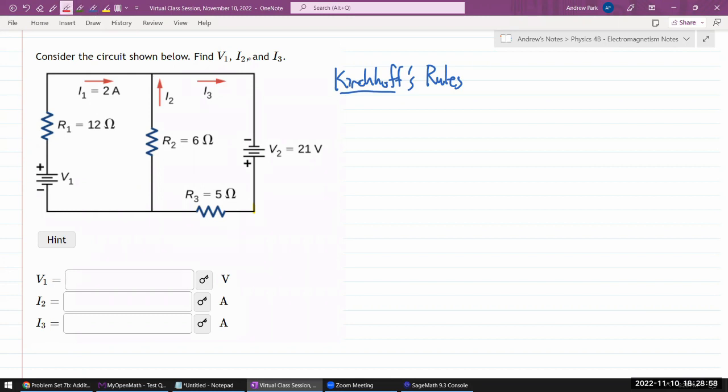I like to write down the junction rule first, because when you use the junction rule there's a very clear guideline to figure out how many times you need to use it. Once you've used the junction rule, you can figure out how many times do I need to use the loop rule. The goal in using Kirchhoff's rules is you want to use them exactly the right amount—the right number of times to come up with the exactly right number of equations that give you an independent system of equations.